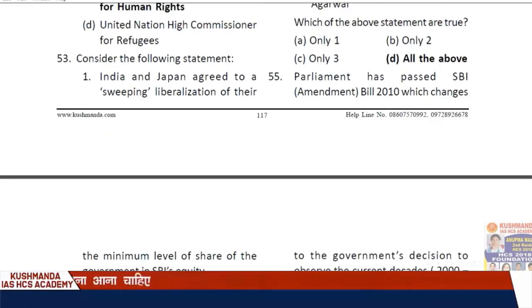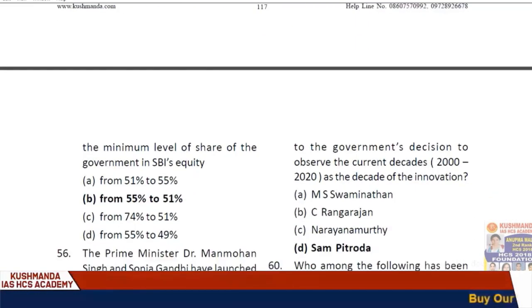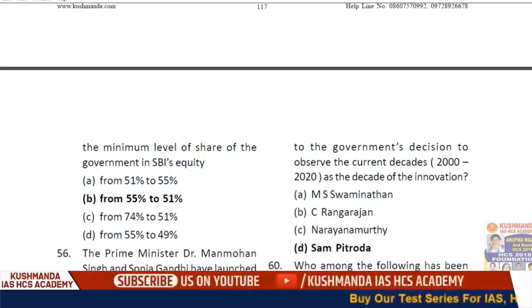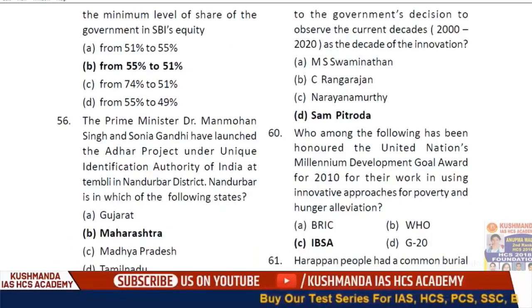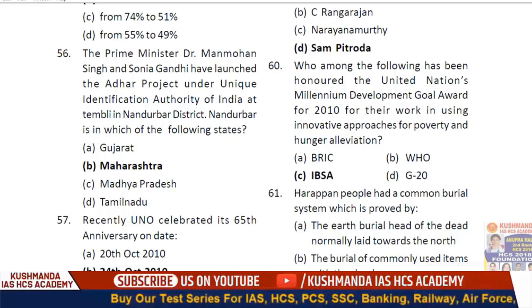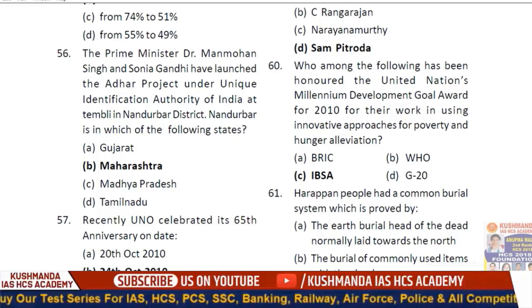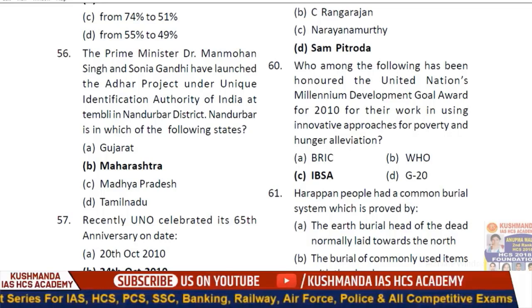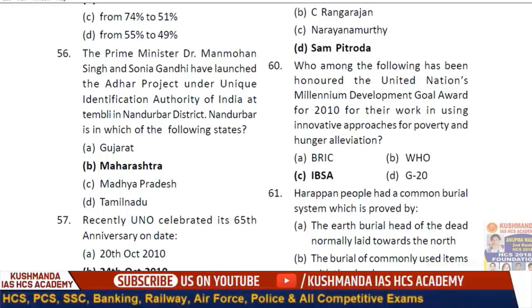Question 55: Parliament passed the RBI Amendment Bill 2010, which reduces the minimum level of government share in RBI equity from 55% to 51%. Prime Minister Manmohan Singh and Sonia Gandhi launched the Aadhaar project under the Unique Identity Authority of India in Nandurbar district, Maharashtra.